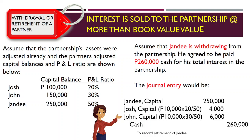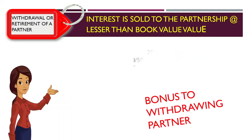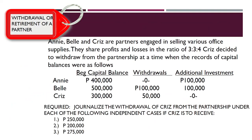Now let us evaluate your understanding. We have three partners named Annie, Belle, and Chris, engaged in selling various office supplies, sharing profits and losses in the ratio of 3 to 4, where Chris is the withdrawing partner. The data is given in the problem. You must first compute the adjusted capital balance: beginning capital balance, less withdrawals, plus additional investment.